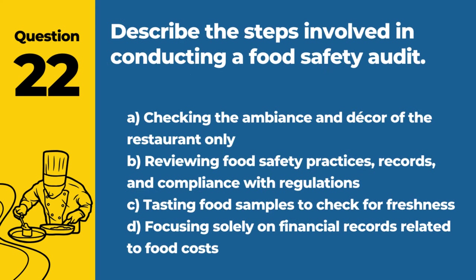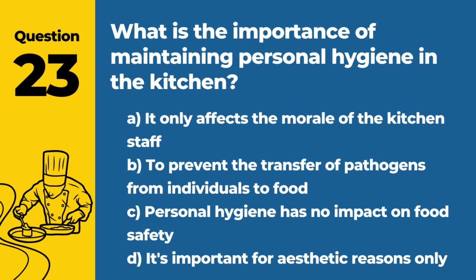Question 22. Describe the steps involved in conducting a food safety audit. Answer: B. Reviewing food safety practices, records, and compliance with regulations. A food safety audit involves a comprehensive evaluation of a food service operation's adherence to established food safety standards and regulations.